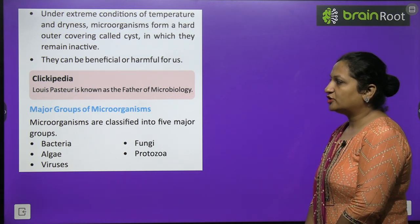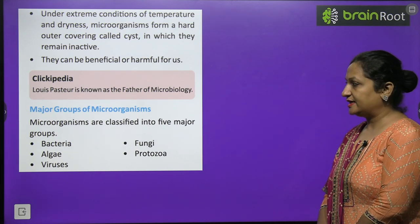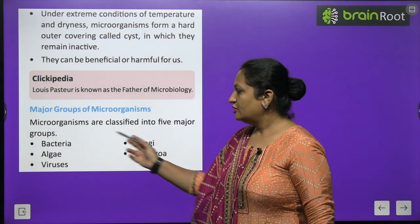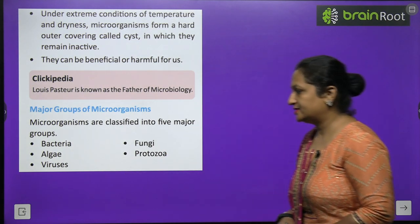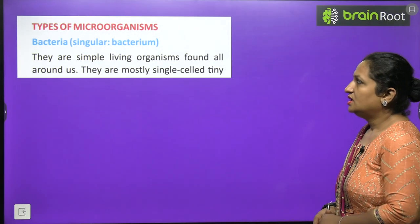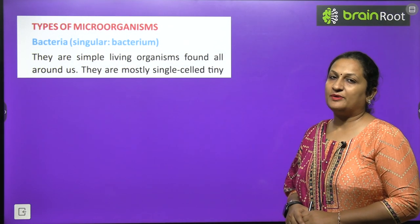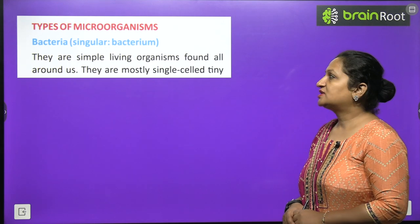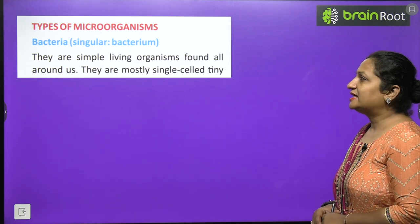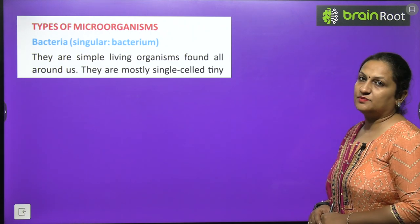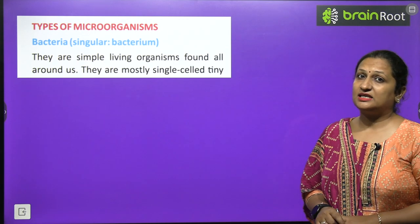Major groups of microorganisms: We divide microorganisms into five major categories — bacteria, fungi, algae, protozoa, and viruses. Bacteria — whose singular is bacterium — are simple living organisms found around us. Bacteria are mostly single-celled organisms present in our surroundings.